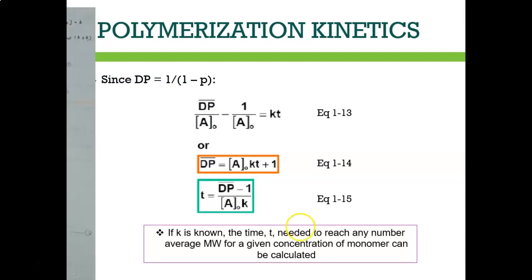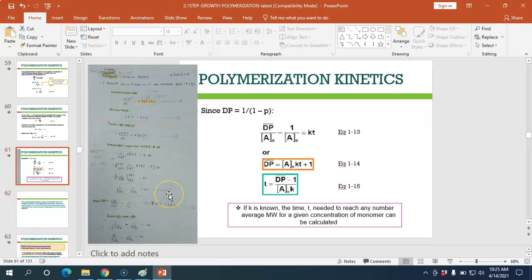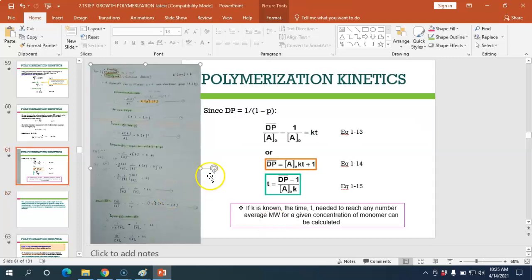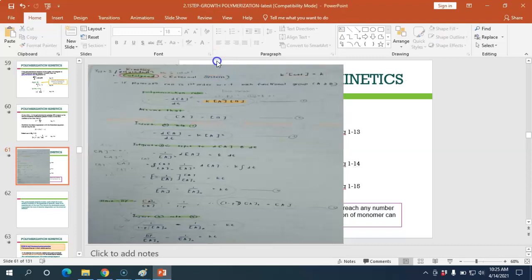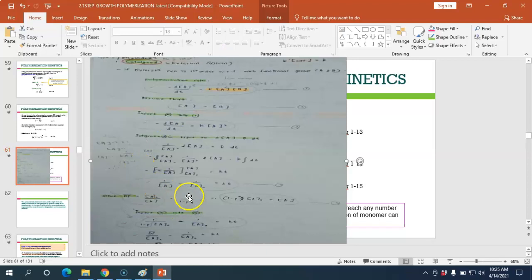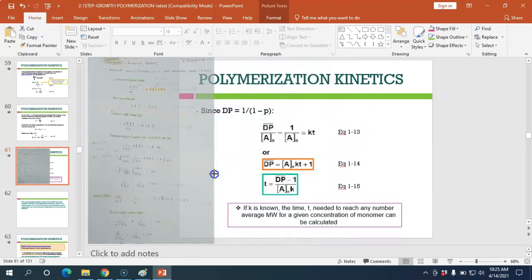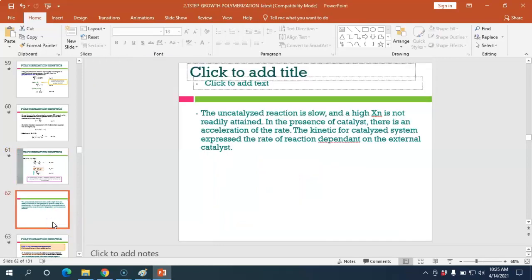If K is known, the time T needed to reach any number average molecular weight for a given concentration of polymer can be calculated. I have notes from when I was studying my degree. If you don't understand how it becomes like that, you can refer to these notes. I will give you this slide and you can refer to my handwriting.